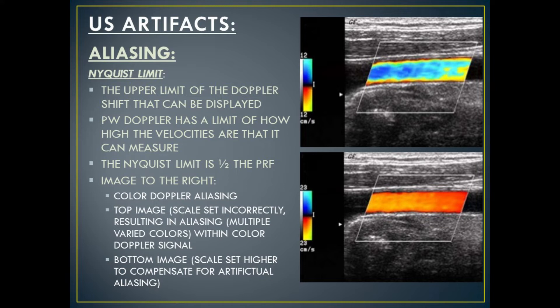The first type of Doppler artifact is known as aliasing. It's important to discuss the Nyquist limit — the upper limit of the Doppler shift that can be displayed by the ultrasound machine. Pulsed wave Doppler has a limit of how high the velocities are that it can measure. The Nyquist limit is half of the PRF, the pulse repetition frequency. The image to the right is an example of color Doppler aliasing. In the top image, the scale is set incorrectly, resulting in aliasing — the multiple varied colors within the color Doppler signal box. In the bottom image, the scale has been set higher to compensate for the artifactual aliasing, and you'll note the nice even colors within the color Doppler box.